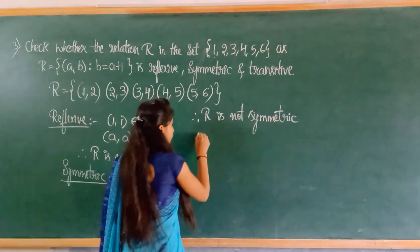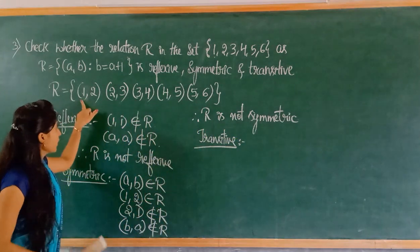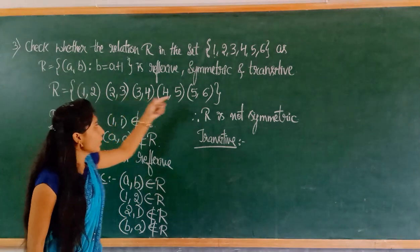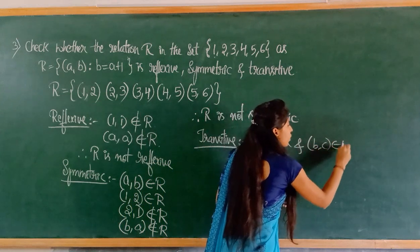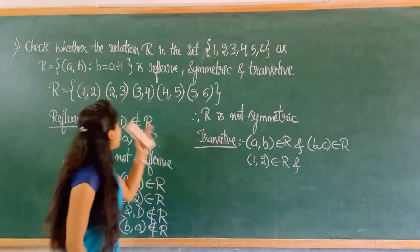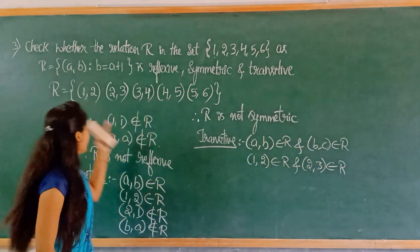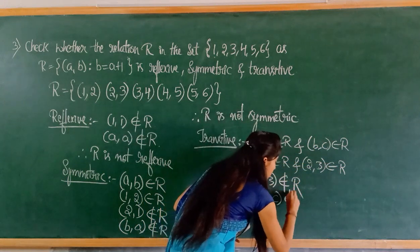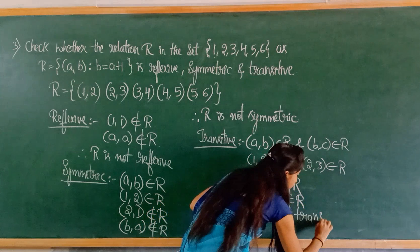The last condition is transitive. If (a, b) belongs to R and (b, c) belongs to R, then (a, c) should also belong to R. Taking (1,2) — it belongs to R, and (2,3) also belongs to R. But (1, 3) is not in this relation. So (a, c) = (1, 3) does not belong to R. Therefore, R is not transitive.